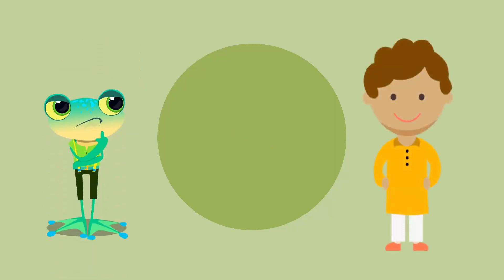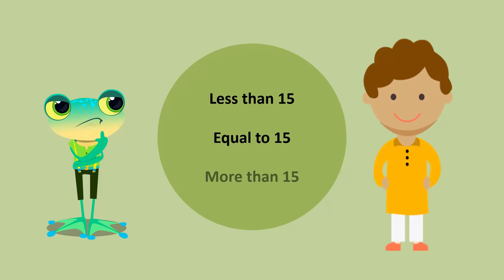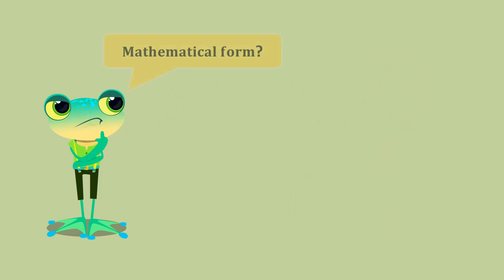Guess how many runs Junaid will score. Well, he may score less than 15, or equal to 15, or more than 15. How do we show this information in mathematical form?